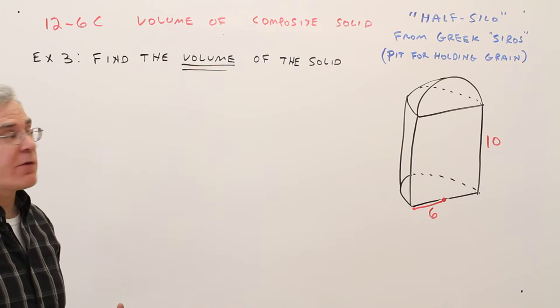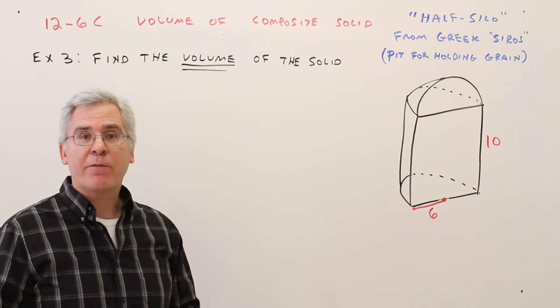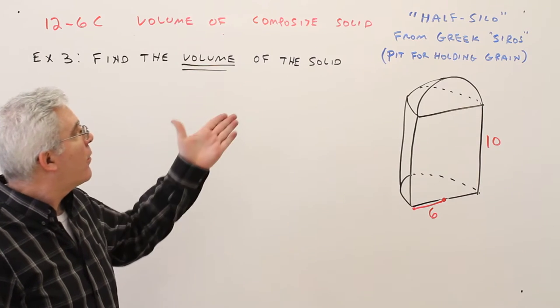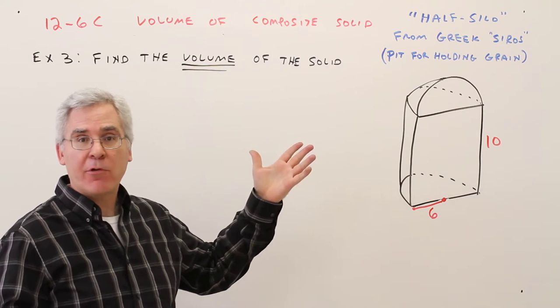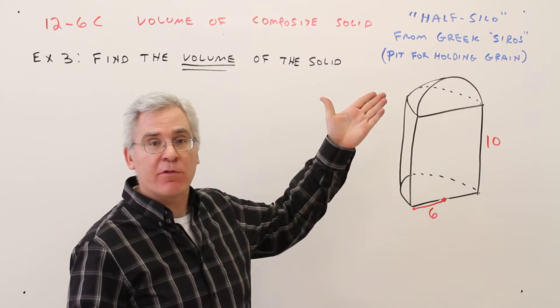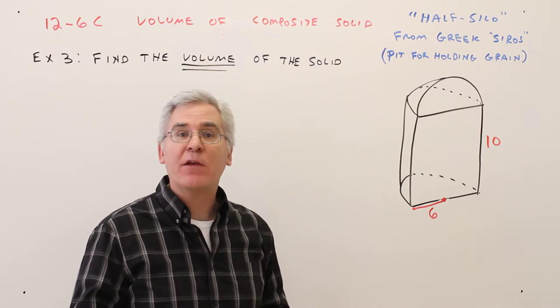Welcome to video 12.6c, Volume of a Composite Solid, or in this case I'm going to call it a half silo, a little bit of vocabulary roots. That's from the Greek word cirros, which means pit for holding grain.